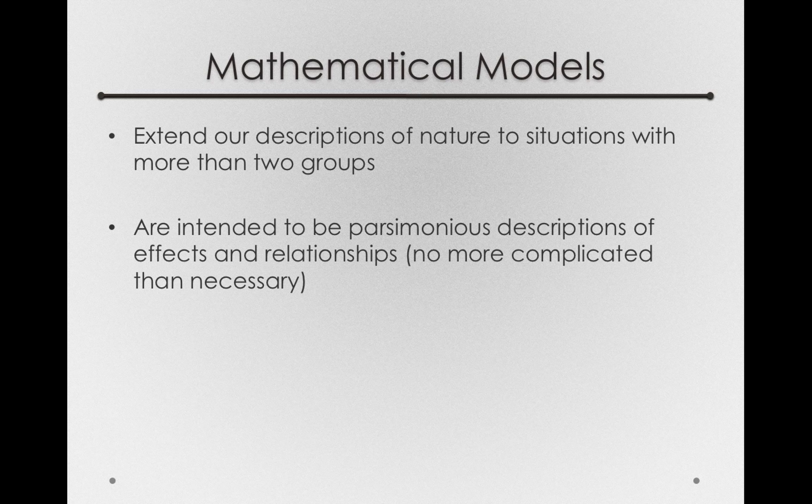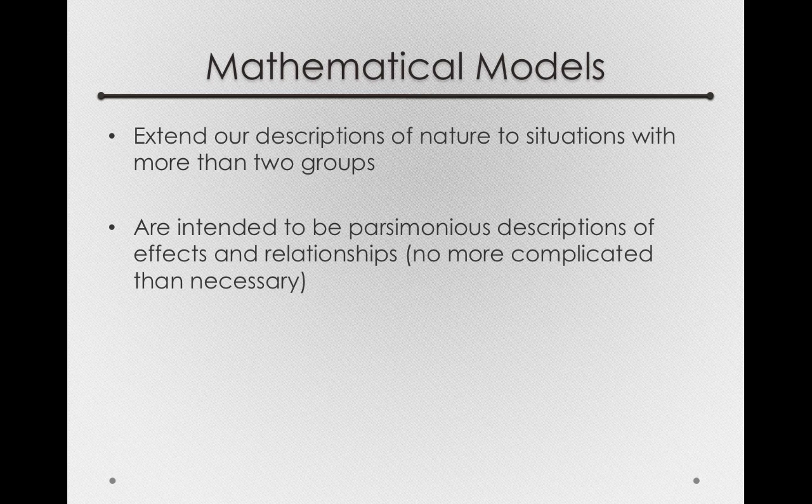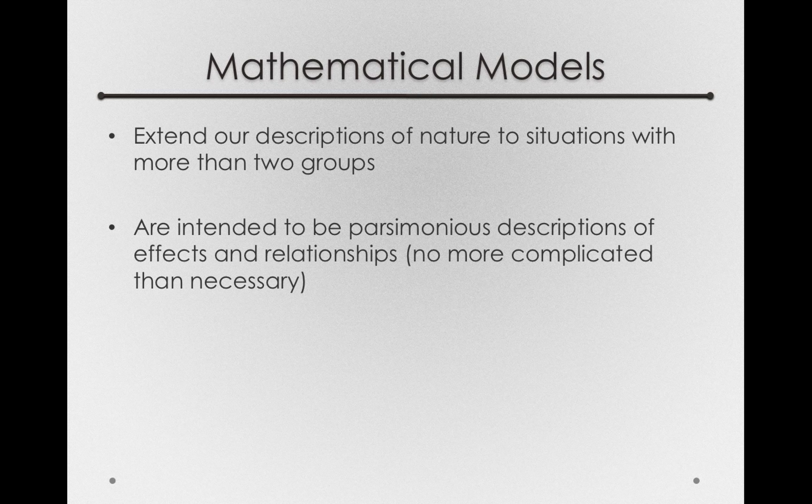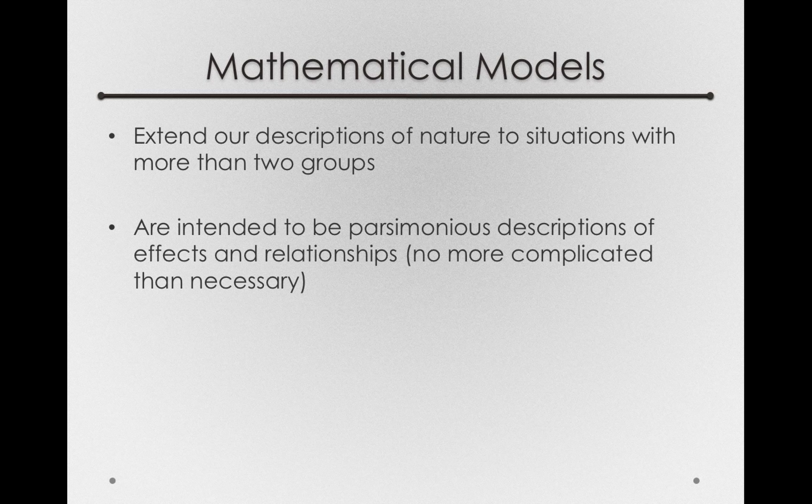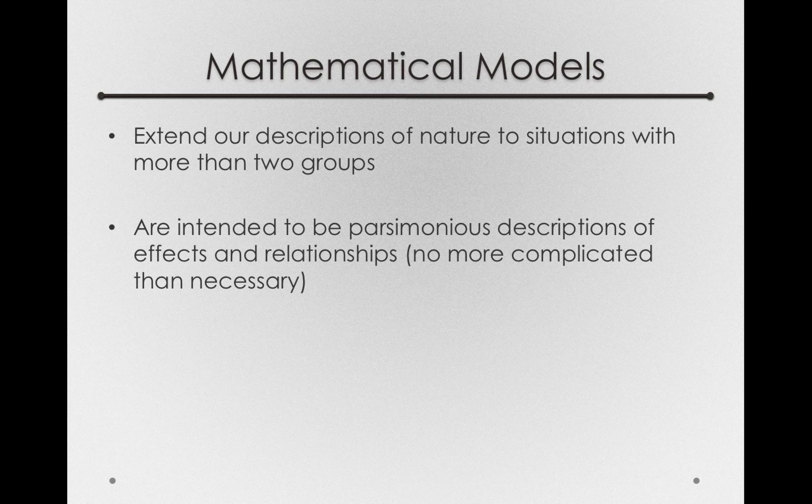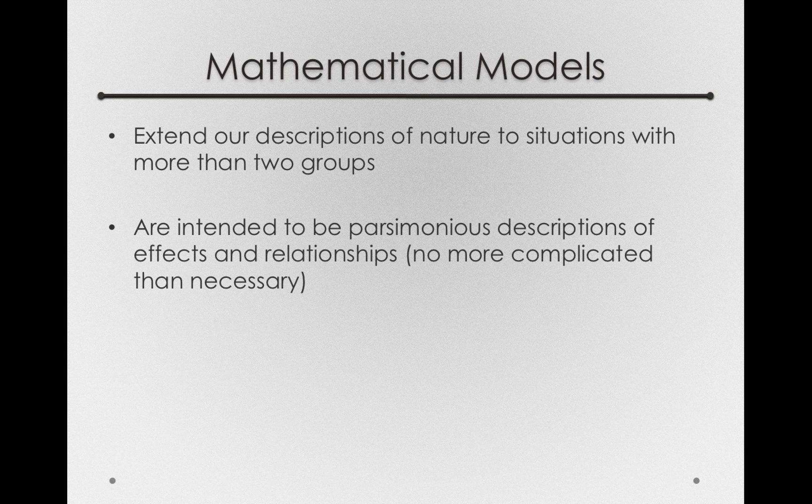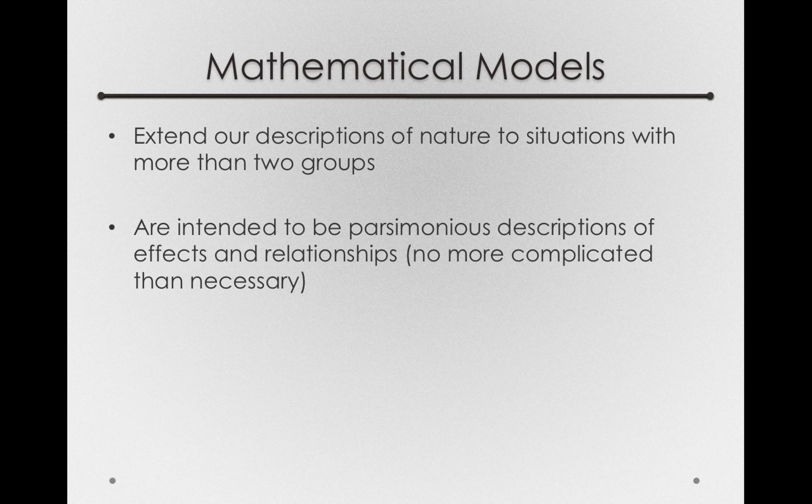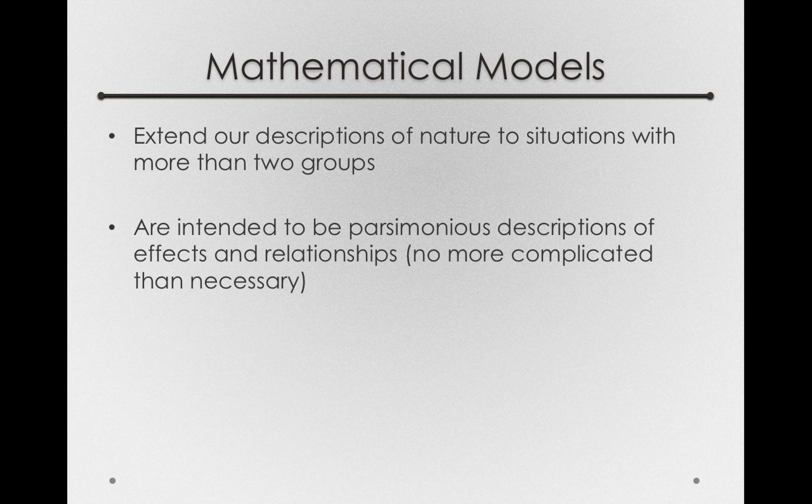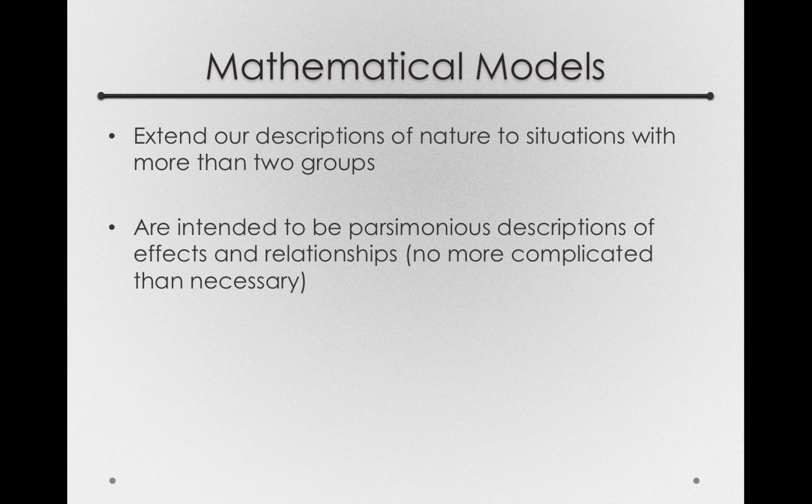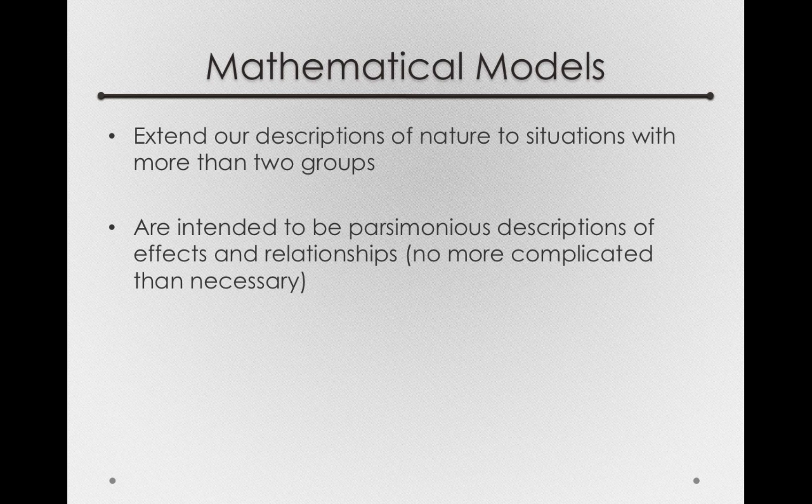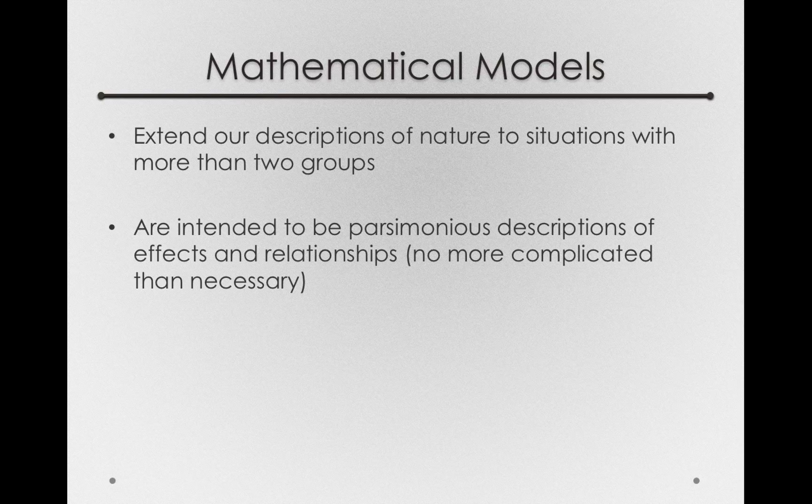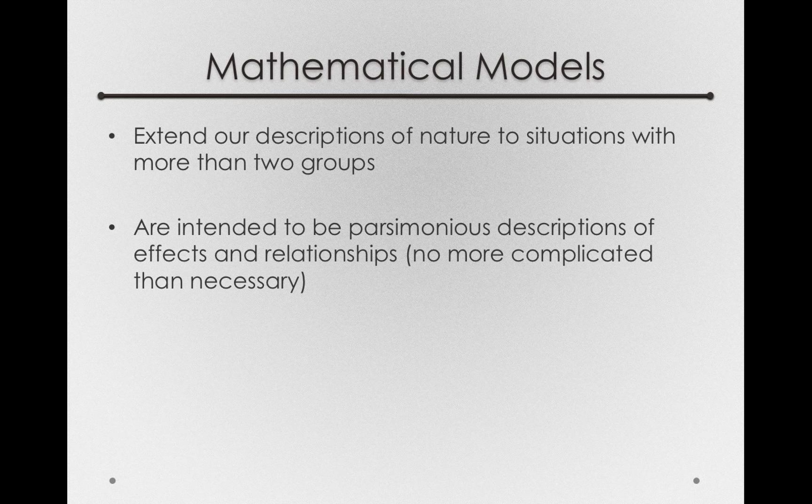Now this is an important point to pause on. We can always develop a mathematical model that is more accurate. That is, makes more specific and precise predictions. But we often do so at the cost of parsimony. So there will be a balance in the models we design. That is, we're going to make our models to be good descriptions of the world with some error that we accept. That is, we know our models will not be a perfect representation of what's happening in the population. But they can still be useful despite the fact that there's some error.